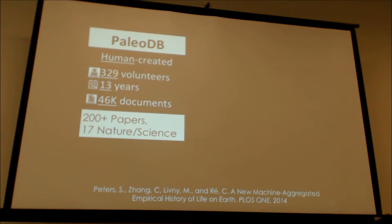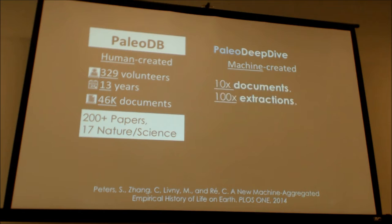They had all these people working on this; we put a grad student on it. So we built Paleo DeepDive, turned it on, did a lot of tuning and validation. When we turned it on, we got 10x more documents than they had been able to enter — from 50,000 to 500,000. It's a machine, it doesn't get tired; you can just feed it as many documents as you like. We can't get access to more because of publishers.